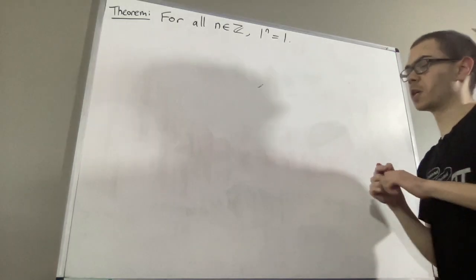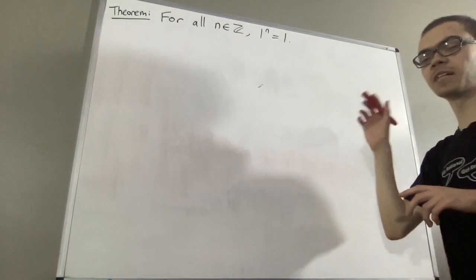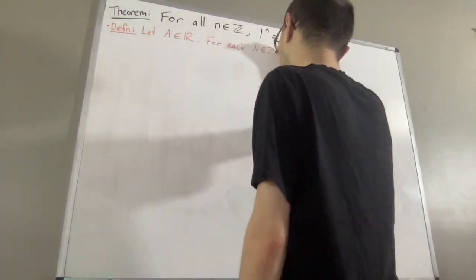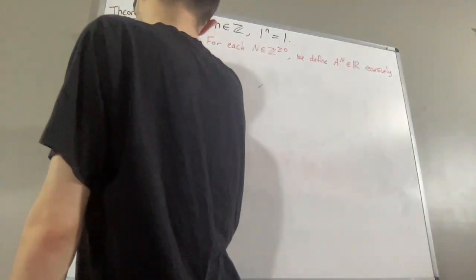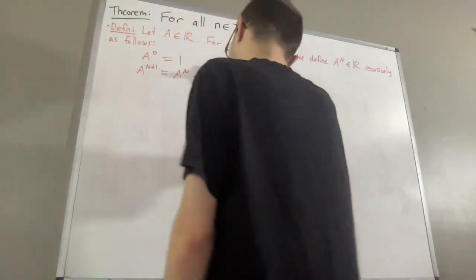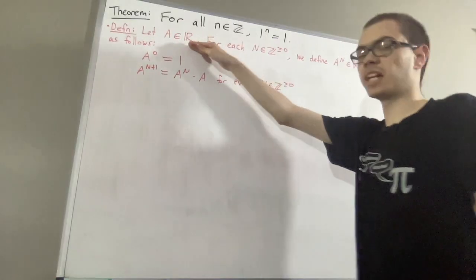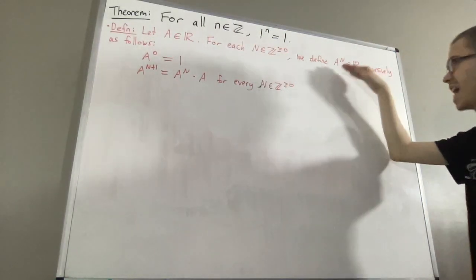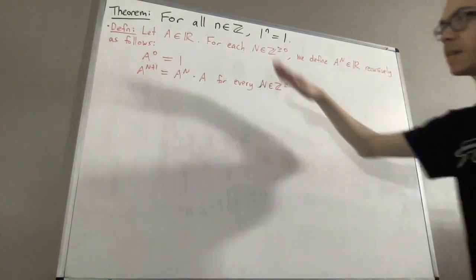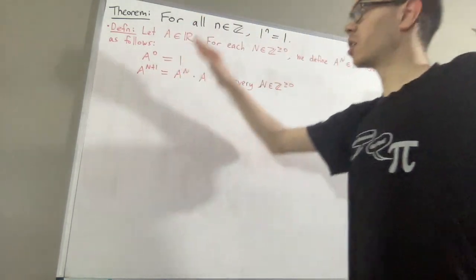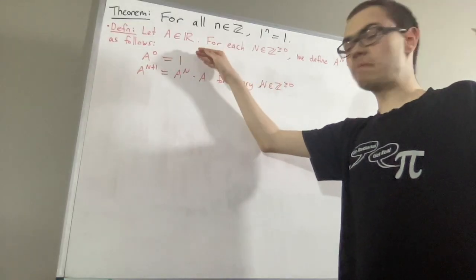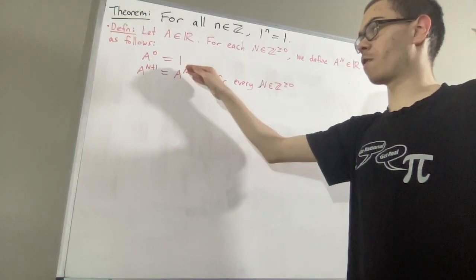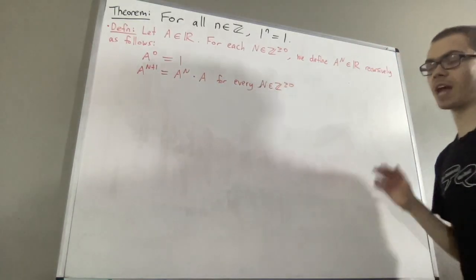Now, let's first remind ourselves of our definition of non-negative integer exponents. Let a be any real number. For each non-negative integer n, we define a to the power of n to be a real number, recursively as follows: a to the power of 0 is equal to 1, and a to the power of n plus 1 is equal to a to the power of n times a, for every non-negative integer n.